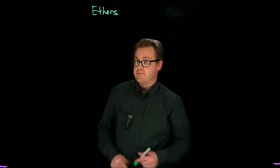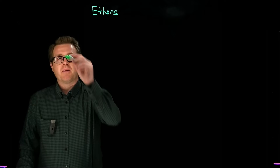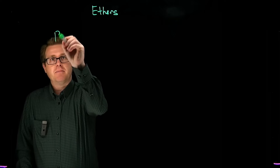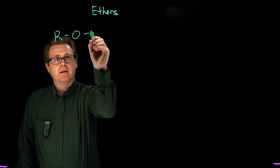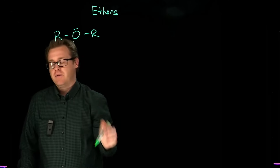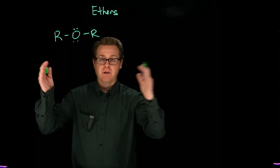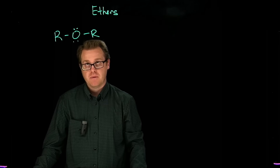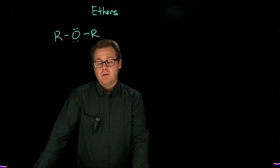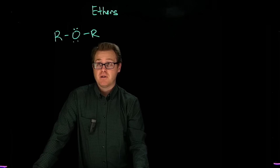Hello, class. What we're going to talk about now is ethers. What is an ether? An ether, simply put, is something that looks like this - that's the generic structure - where you have an oxygen atom that's sandwiched between two alkyl groups. When we take a look at an ether, that's just a very simple generic structure.